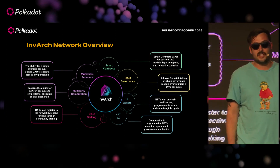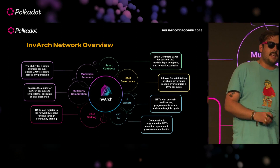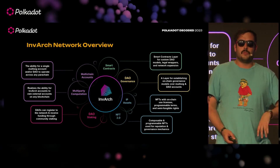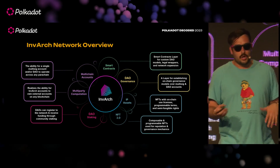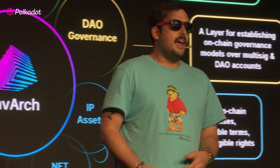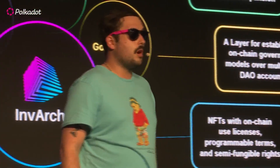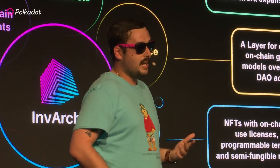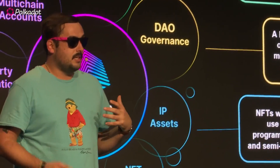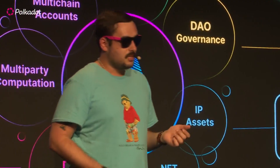We also have DAO staking and NFT 2.0 technology. Anyone familiar with Rmrk — very similar, like Unique's pallet v2. These are composable NFTs which can be used for a myriad of different use cases, one of them being on-chain reputation systems, which we're particularly interested in.